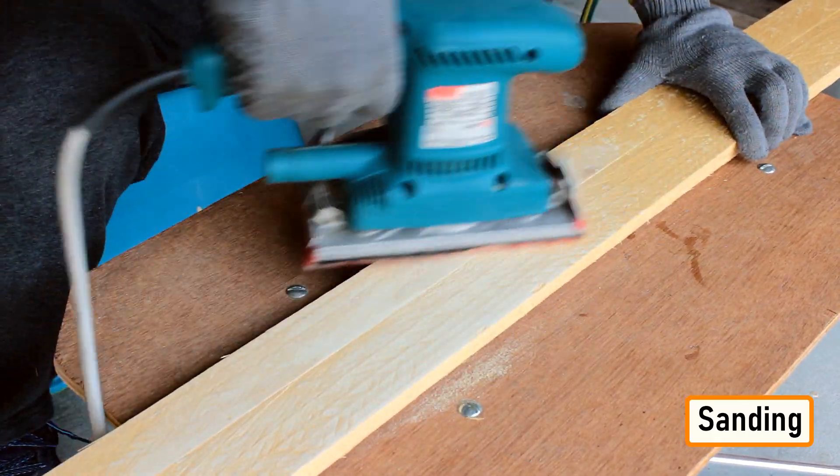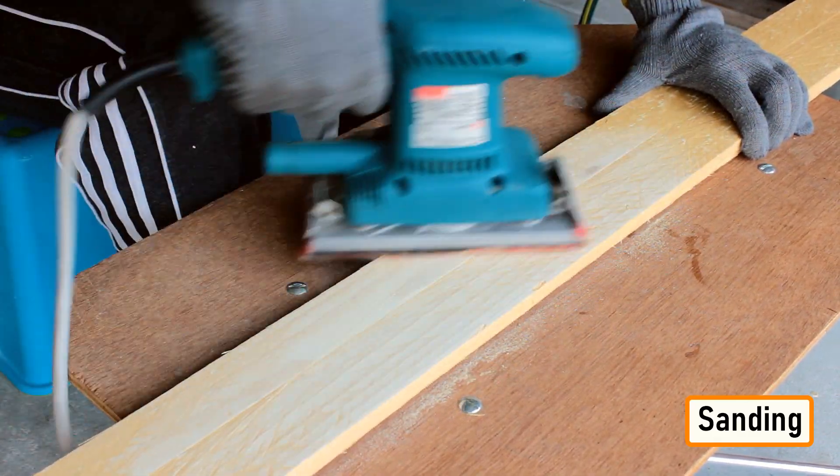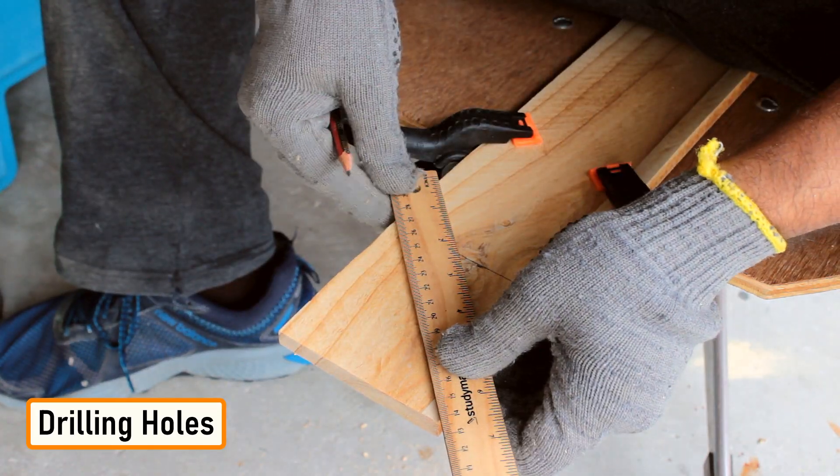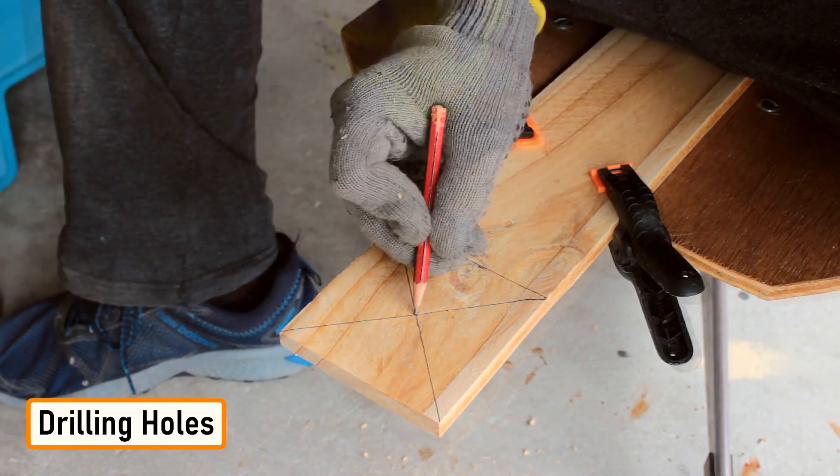Let's start the project by sanding a pallet plank to give it a nice and smooth texture. Then let's drill three holes for the top and the two sides of the night lamp.